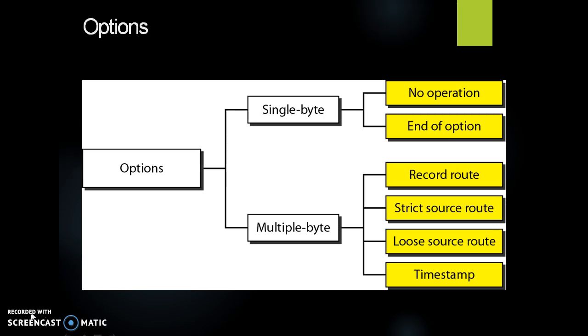Record route is used to record the Internet routers that handle the datagram. It can be used for debugging and management purposes. Strict source route is used by the source to predetermine a route for the datagram as it travels through the Internet. If the datagram specifies a strict source route, all the routers defined in the option must be visited by the datagram. Loose source route is similar to the strict source route. Each router in the list must be visited, but the datagram can visit other routers as well.